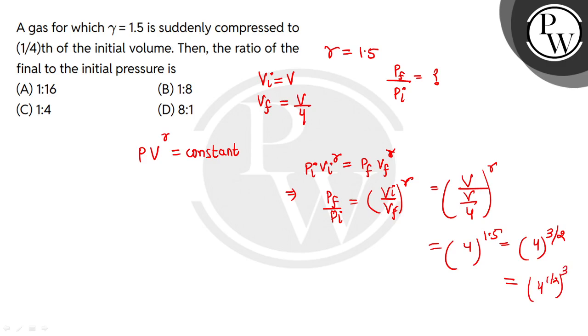Because 3/2 becomes 1/2 times 3. And what is 4 to the power 1/2? What is the square root of 4? It's 2. So this will become 2 to the power 3, which is 8.